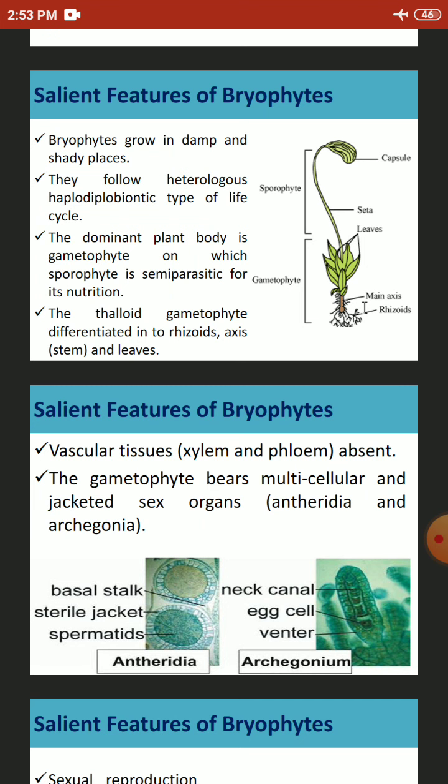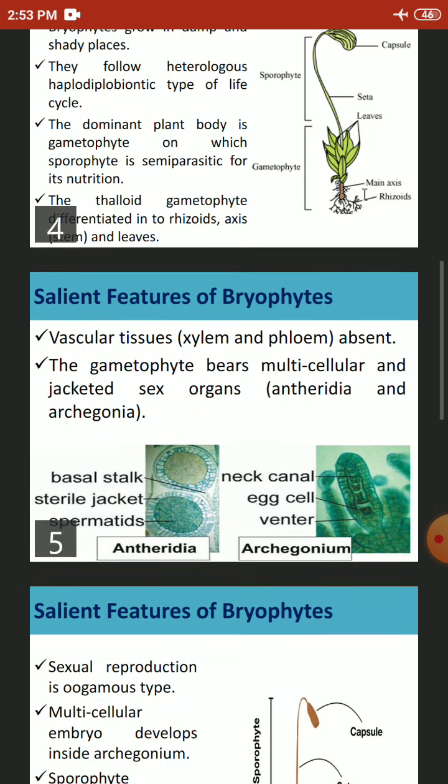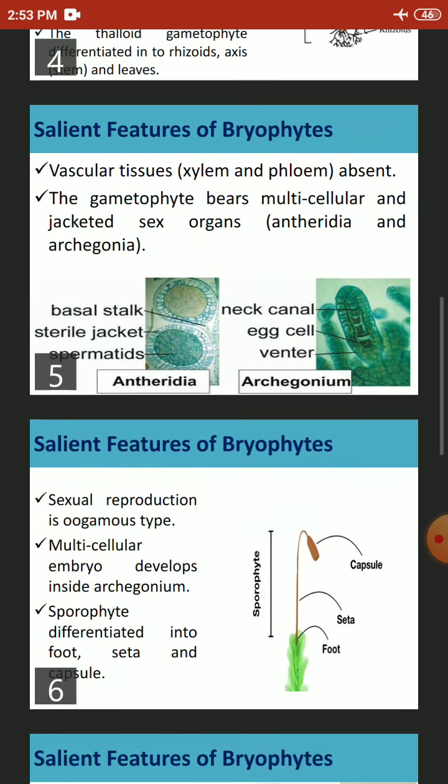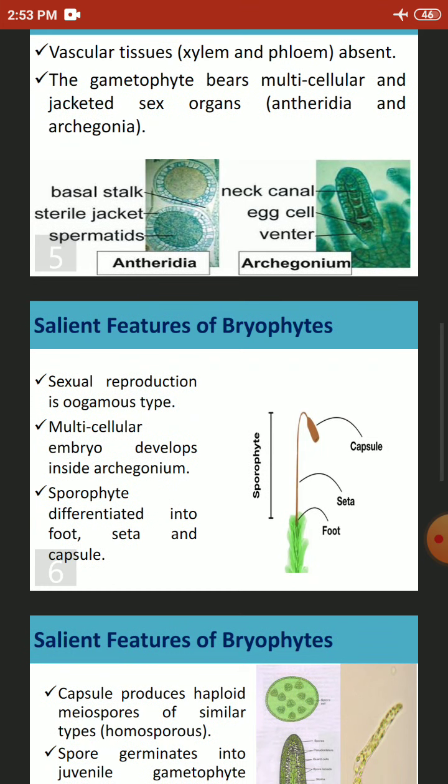The vascular conducting tissues in the form of xylem and phloem are completely absent from this group. The gametophytes bear multicellular and jacketed sex organs — the antheridia and archegonia.